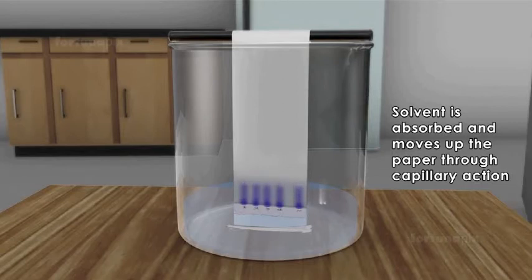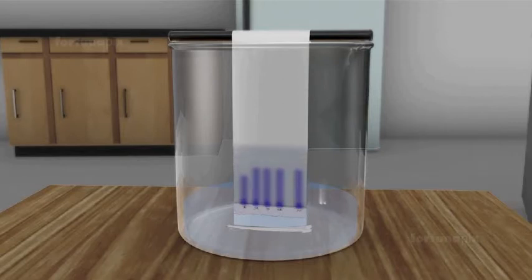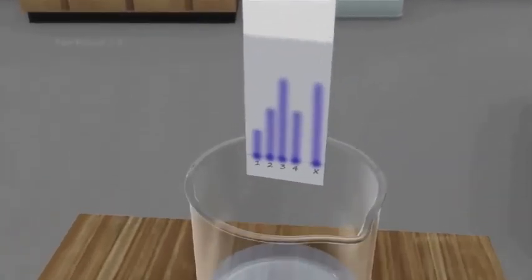As the solvent is absorbed and moves up the paper through capillary action, you will observe the components of the ink begin to bleed. The ink mixtures separate into different spots. After the solvent reaches the top of the paper, remove the paper to dry.